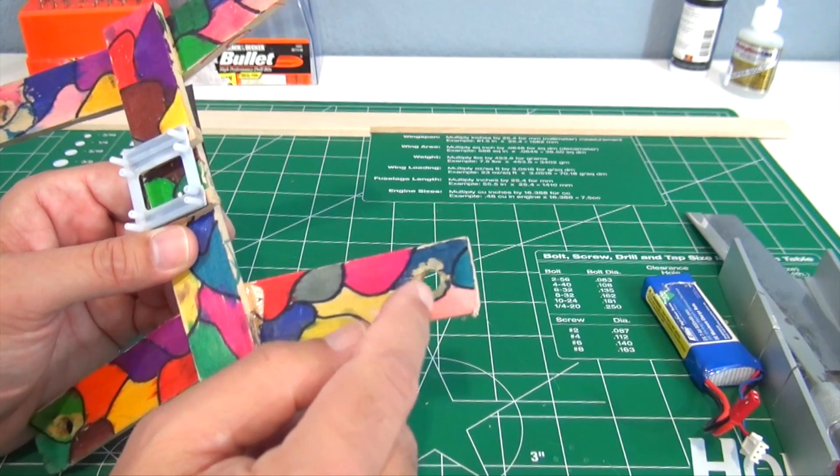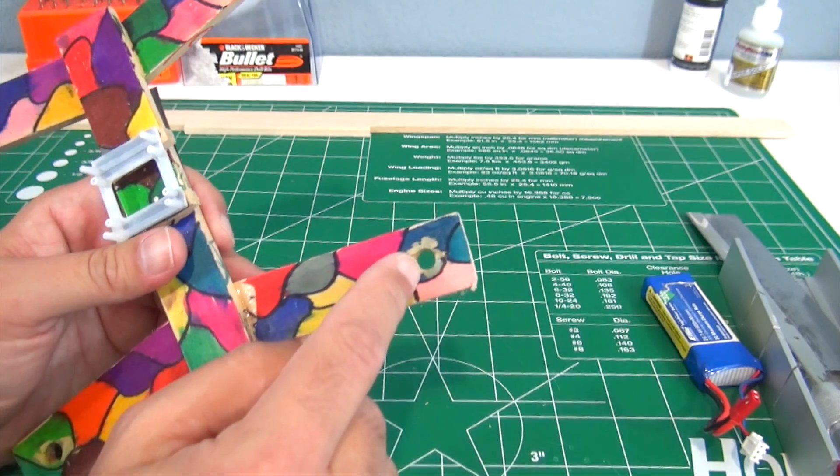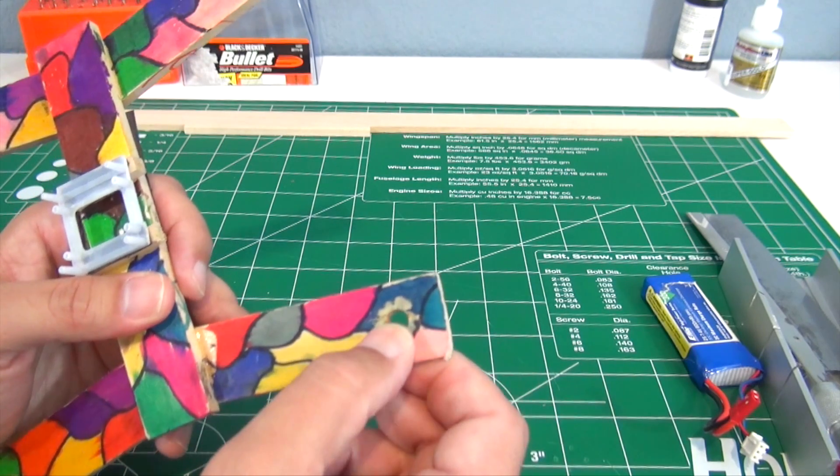So once you get that just big enough, I put some CA around the hole just to harden the wood and then put the motor on. So with this step, be slow doing it, because if you rush it, you drill too big a hole, try too fast, you could fracture the wood. So you want to be careful doing it, you want to take your time with that.